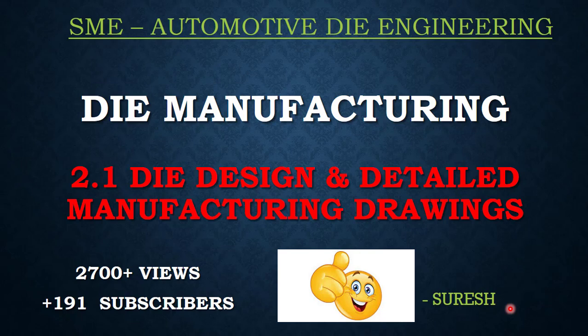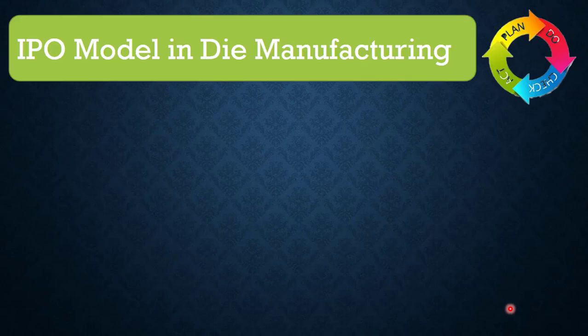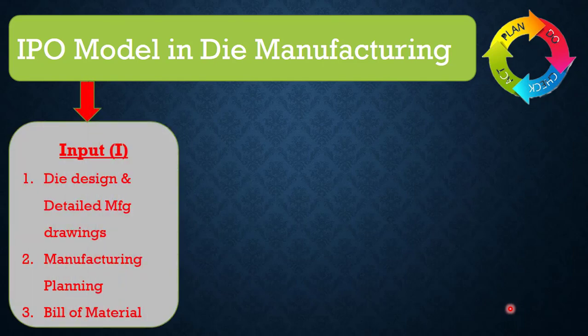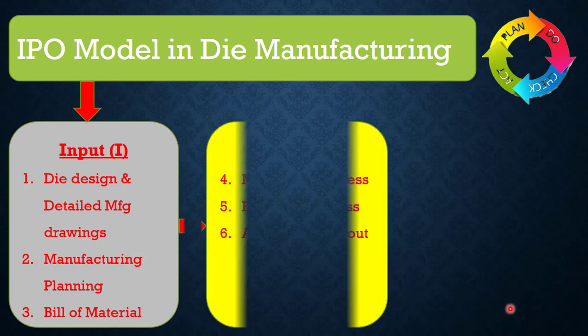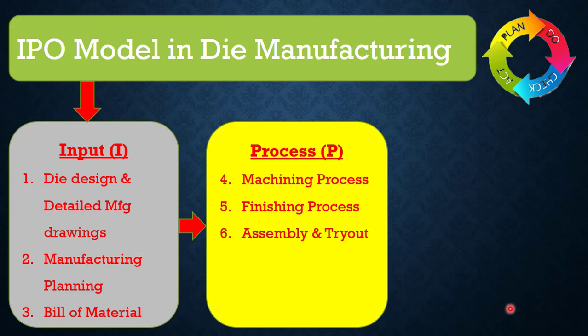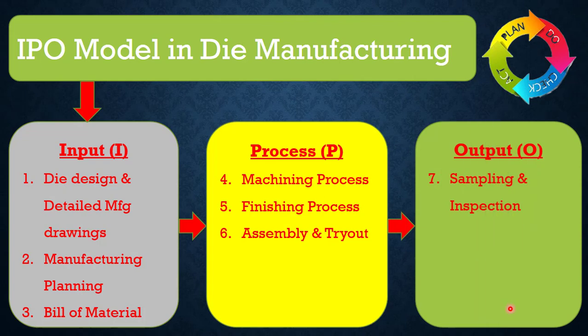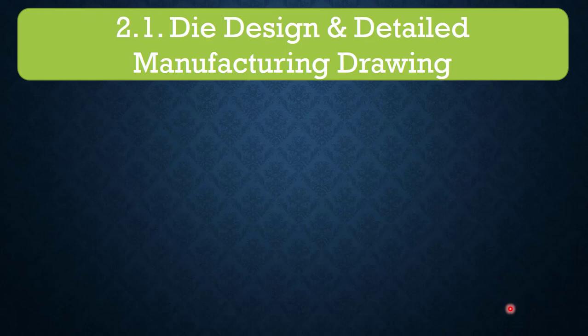Hello friends, this is Suresh, SME in automated die engineering. We will continue on die manufacturing process through the IPO model which I shared in the last module. IPO is nothing but input, process, output. The three inputs are die design and detail manufacturing drawings, manufacturing planning, and bill of material. The process includes machining, finishing, assembly and trial process, and the output comes as sampling and inspection. Today's topic is 2.1: die design and detail manufacturing drawing.